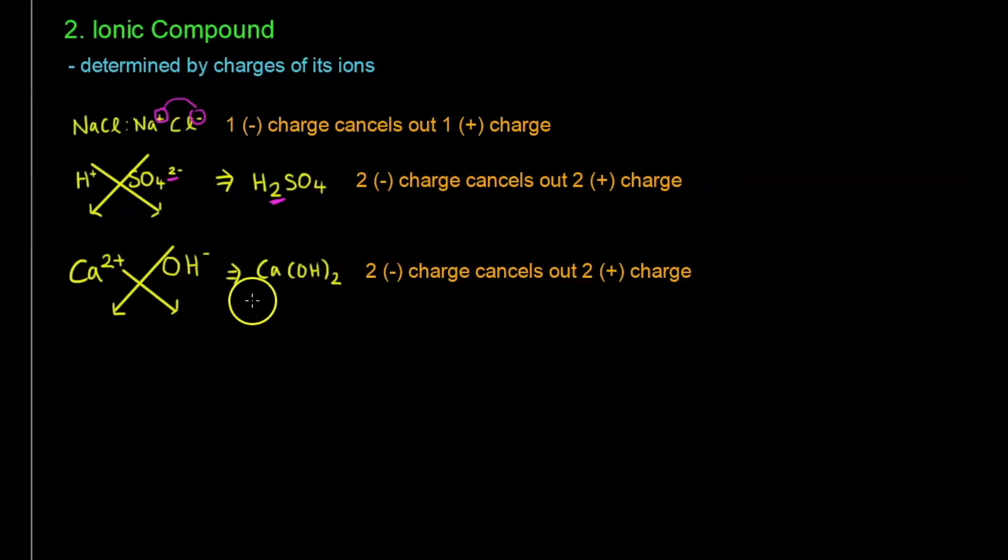The logic behind this is similar to the previous two. Ca2+ has 2 positive charge, I need 2 negative charge to cancel this 2 positive charge. So I need 2 OH of them, because if I write it down, it's Ca2+, OH minus, OH minus, this one cancels out.